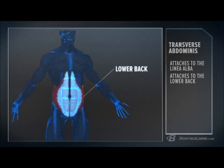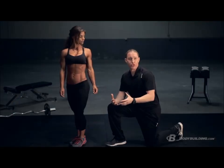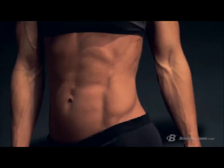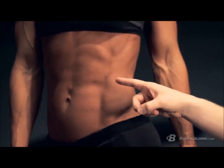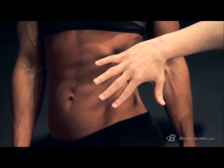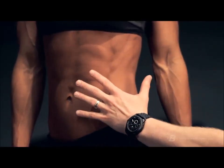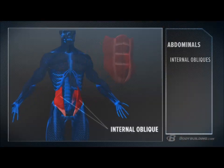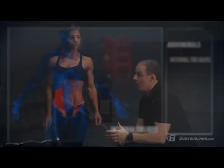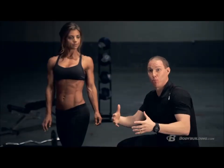Next we have the intermediate layer, which is essentially your internal oblique. Everybody's familiar with the external obliques on the outside, but if external obliques run this way, your internal obliques run in the opposite fashion. You can imagine a muscle that runs from the linea alba, coming down and across and attaching to your hip bone.